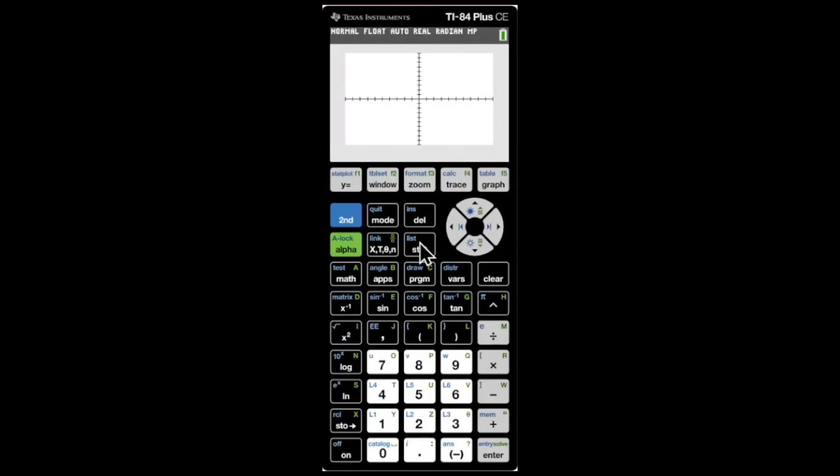I'm going to go to STAT and edit. Click on enter here. I'm going to type in the numbers: 0.1, enter, 0.5, enter, 0.9, 1.5, 1.9, 2.3, and 2.6.